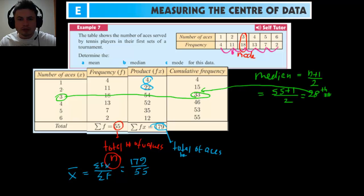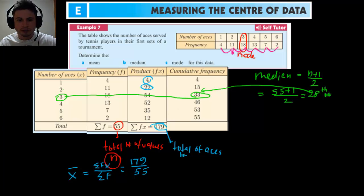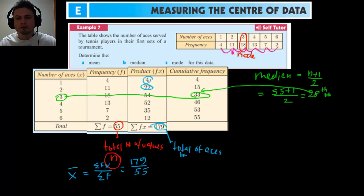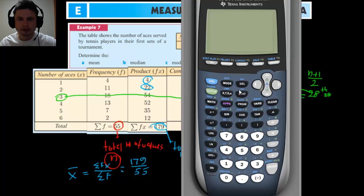Now let's double-check all our work using a calculator, which you should definitely do — especially when you have a lot of manual labor and you're not sure if you did it correctly. We didn't really finalize our mean, and we're not completely sure the median is correct — it could be 2 or 3. We're only confident about the mode. So let's verify on the calculator.